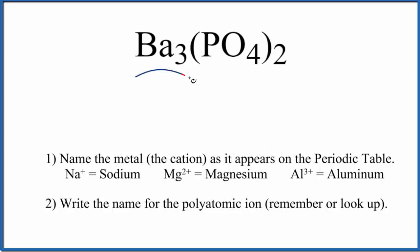So first off, we have barium, that's a metal, and this PO4, this is a group of nonmetals, this is a polyatomic ion. So we have an ionic compound, that's why we're using these rules here.